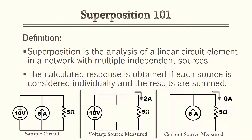Looking at the illustrations below, we have two different sources — a voltage source and a current source — going to a single resistor. One at a time we measure each source as shown. It's a very simple process and we'll go over those steps later in the examples.